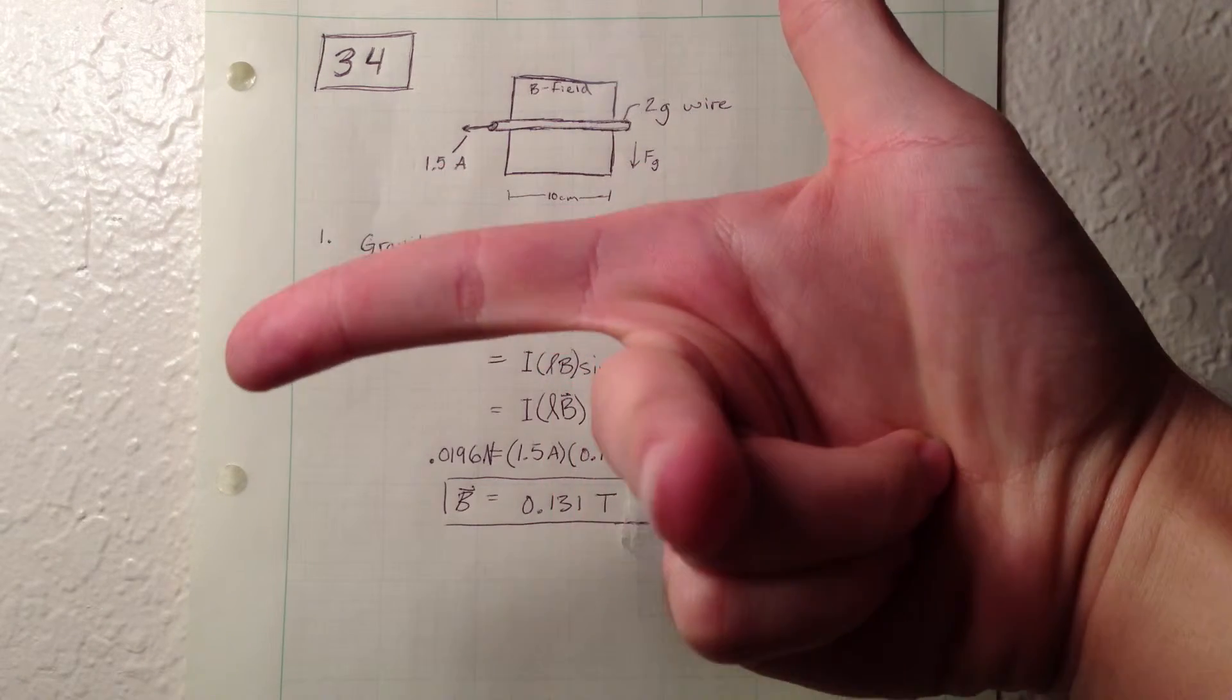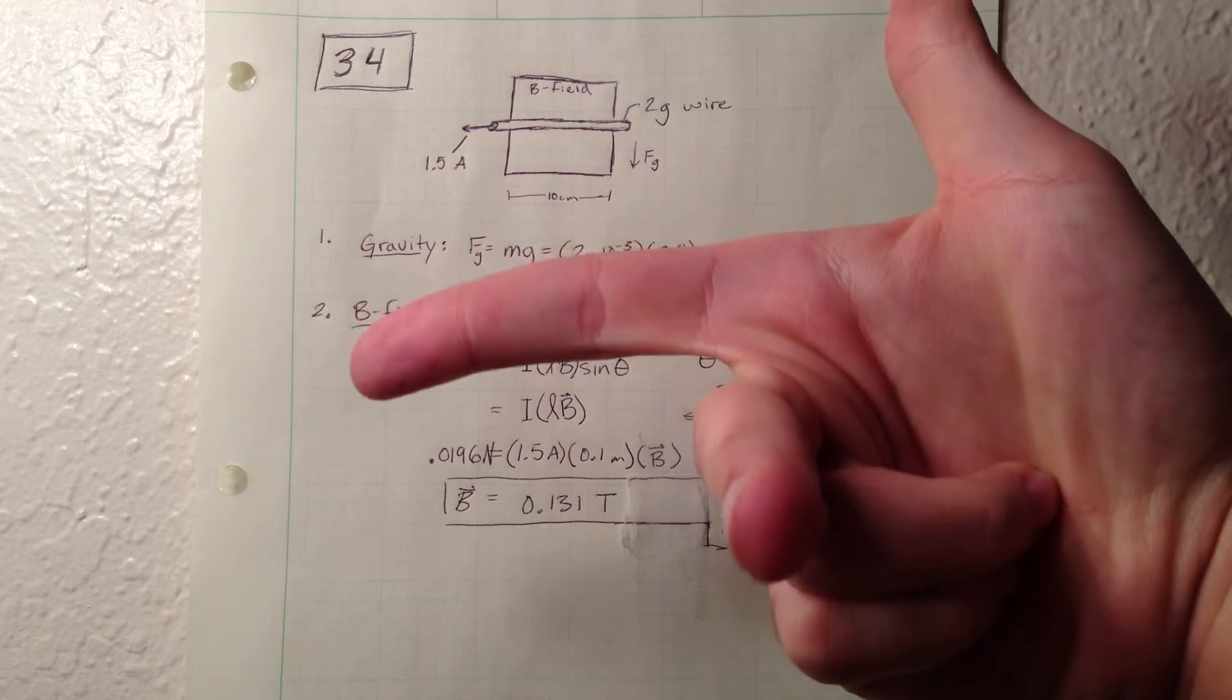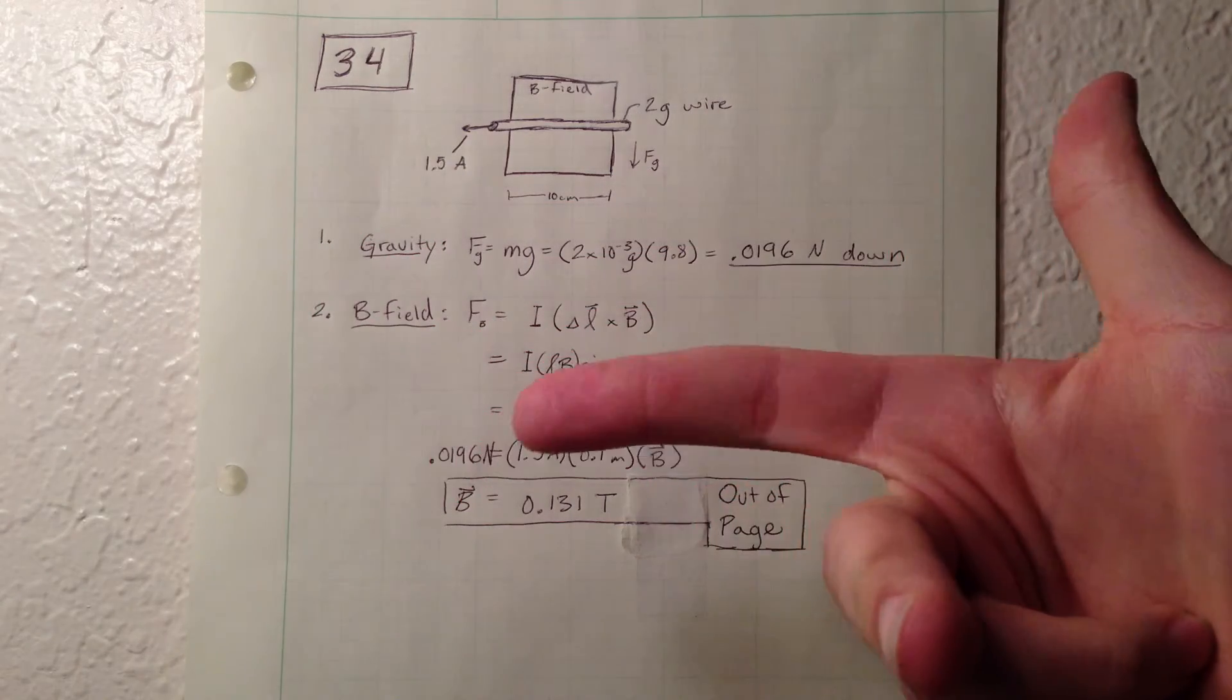So now we know that the B field direction is going to be out of the page. And we can move on from there and solve for B to get the magnitude.